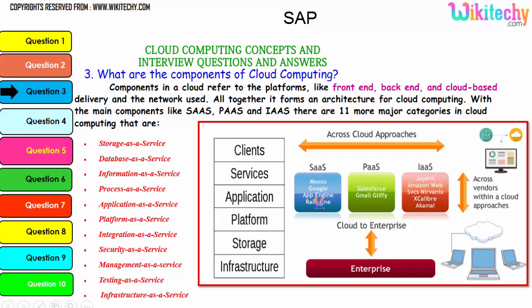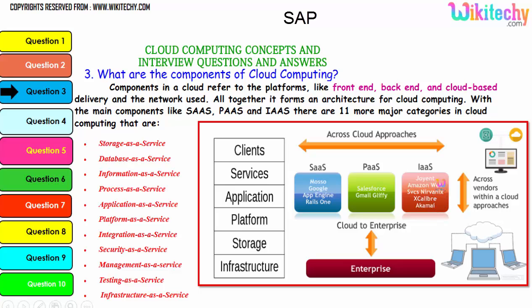For software as a service, typical examples are App Engine and Google. For platform as a service, examples include Gmail, Glyphi, and Salesforce. For infrastructure as a service, there are many companies such as Amazon Web Services, Rackspace, Akamai, and others. These are all additional services associated with the three major service categories to form cloud computing.